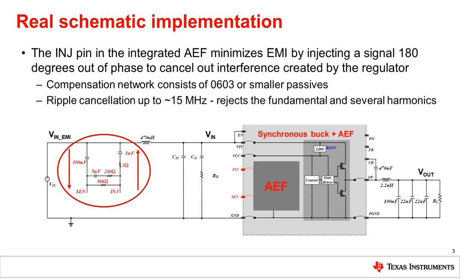Here's what AEF looks like in a real schematic. We see that the buck regulator has a sense pin and an inject pin for sensing VIN EMI and injecting current to cancel the ripple. The compensation network circled in red ensures the filter remains stable, targets the desired frequencies, and injects the optimal amount of current. All of these components can be a small 0603 package or smaller, which keeps the size and cost to a minimum.